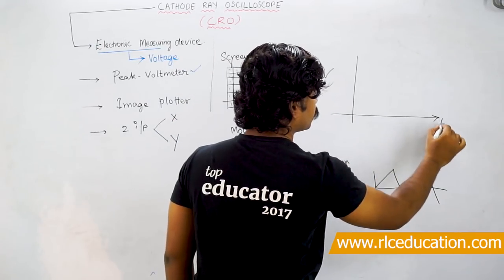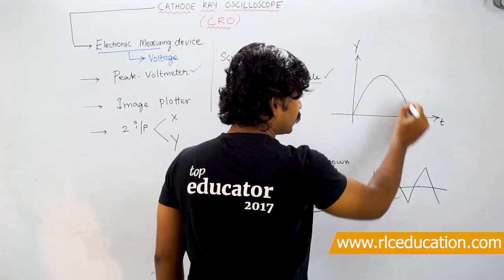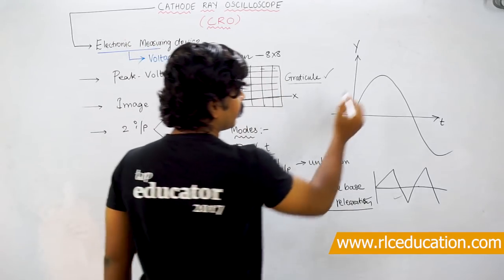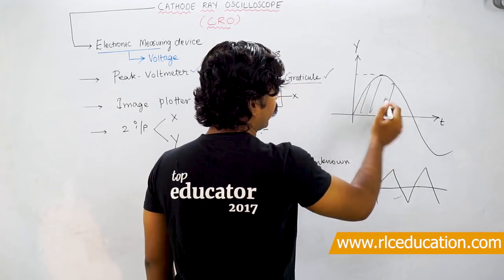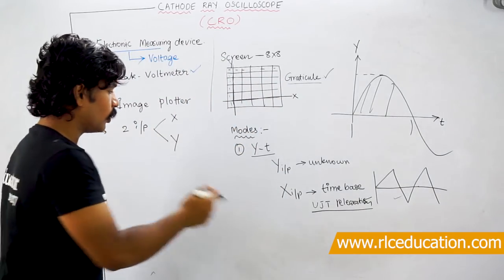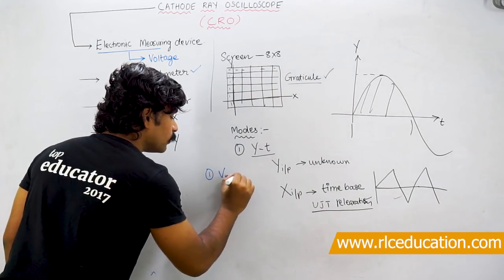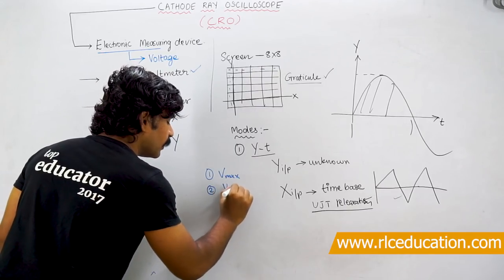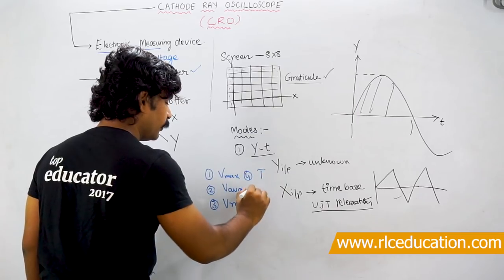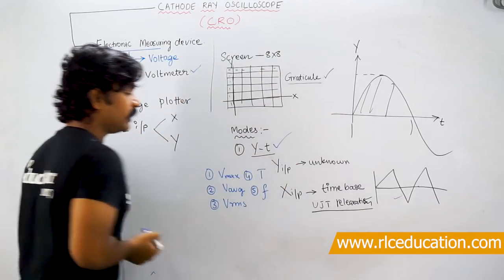When an unknown signal is given to Y input and the time base to X input, the output is a plot of that signal with respect to time. From this graph, you can measure: the peak value, the average value, the RMS value, the time period, and the frequency of the signal. These 5 quantities can be measured using YT mode.